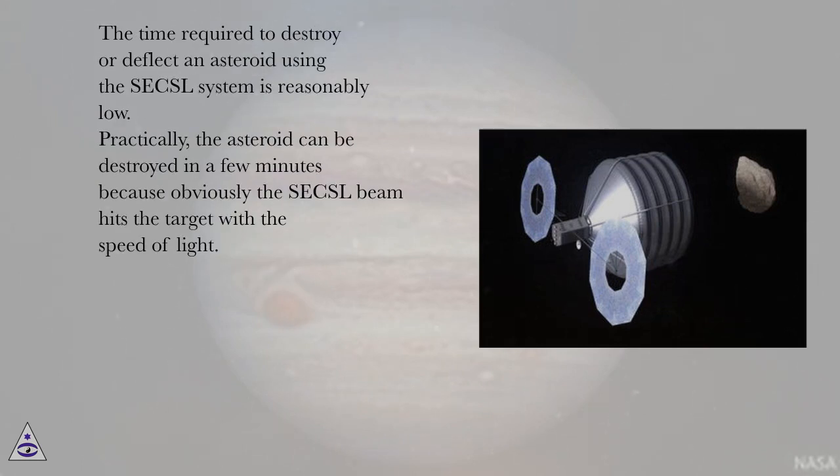The time required to destroy or deflect an asteroid using the SECSL system is reasonably low. Practically, the asteroid can be destroyed in a few minutes because obviously the SECSL beam hits the target with the speed of light.